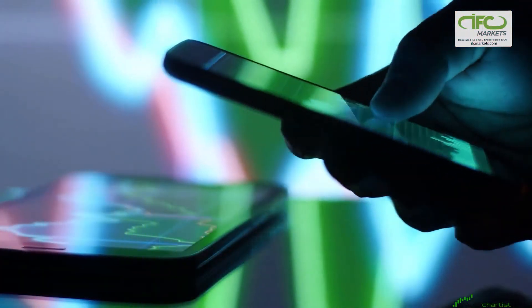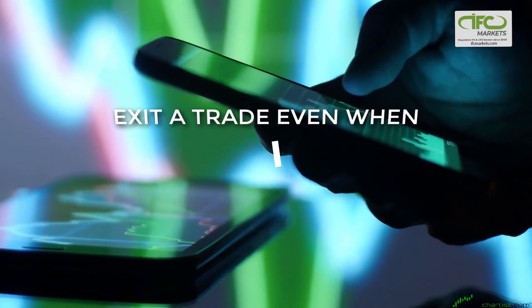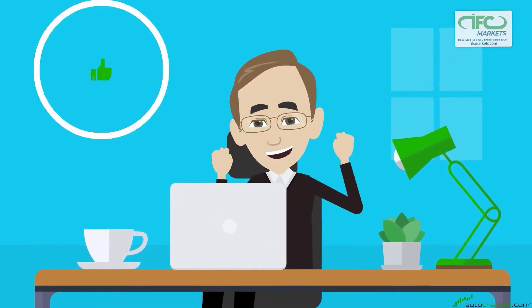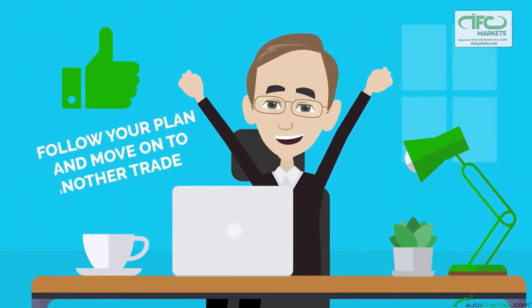You must be objective about your trading system so that you exit a trade even when you think you could make more by breaking your rules. Be satisfied with what you have, follow your plan, and move on to another trade.